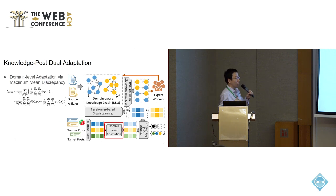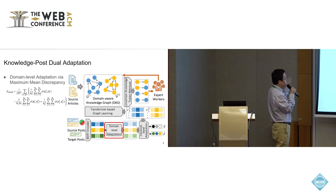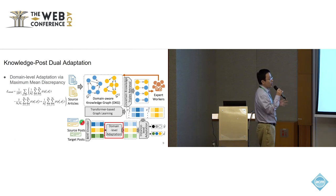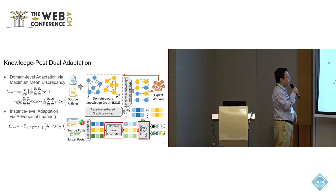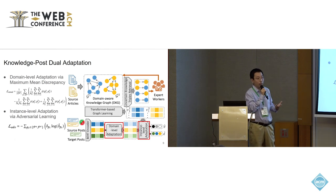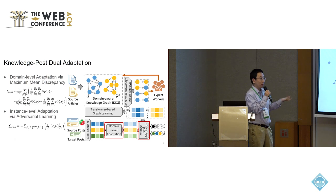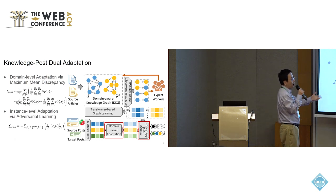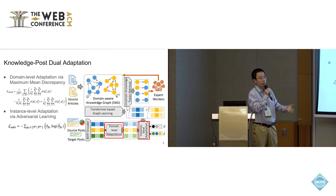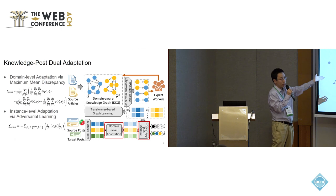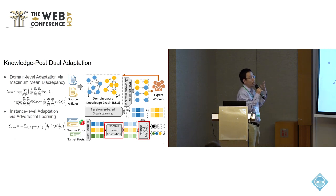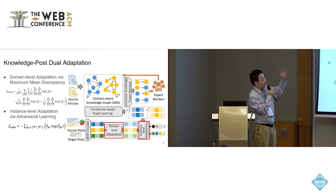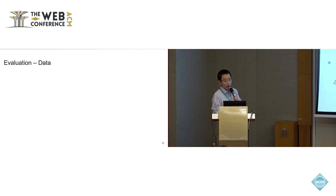The last module performs demand adaptation. Unlike traditional domain adaptation that only minimizes discrepancy at the demand level, we also perform instance-level adaptation using adversarial learning. The intuition is that a target claim may relate more to one source demand than another — for example, a claim about monkeypox's fatal outcomes for cancer patients should draw more from the cancer knowledge graph, while a claim linking monkeypox to COVID vaccines should draw more from the COVID knowledge graph.